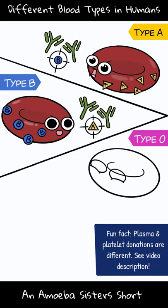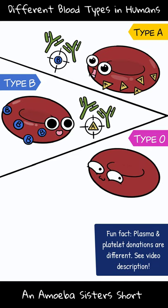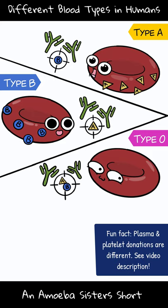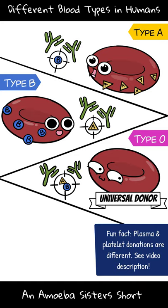Type O blood doesn't have either of these antigens and has antibodies against both. Therefore, type O can't receive A, B, or AB blood types. But type O is a universal donor.